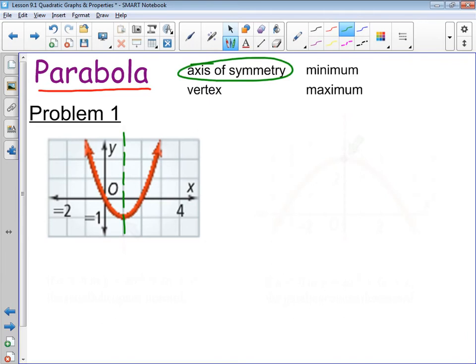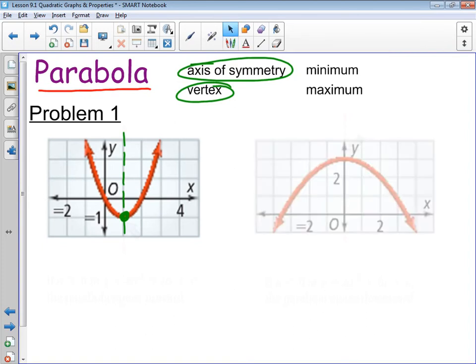So each parabola has an axis of symmetry. The lowest point or the highest point on a parabola is called a vertex. So in this example, the vertex is at the bottom. So each parabola has a vertex and an axis of symmetry.